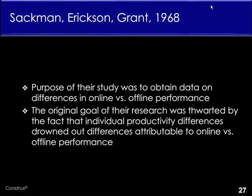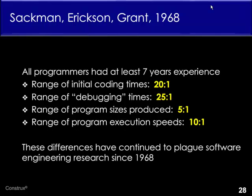In that study, all programmers had at least seven years of experience — practicing professional programmers who were reasonably experienced. They found the range of initial coding times varied by a factor of 20 to 1. The range of debugging times — which in 1968 basically meant unit testing and debugging in today's terminology — varied by a factor of 25 to 1. The range of program sizes produced varied by 5 to 1, and the range of execution speeds varied by 10 to 1. Across the board, there were significant differences in how programmers performed given very similar or identical tasks.